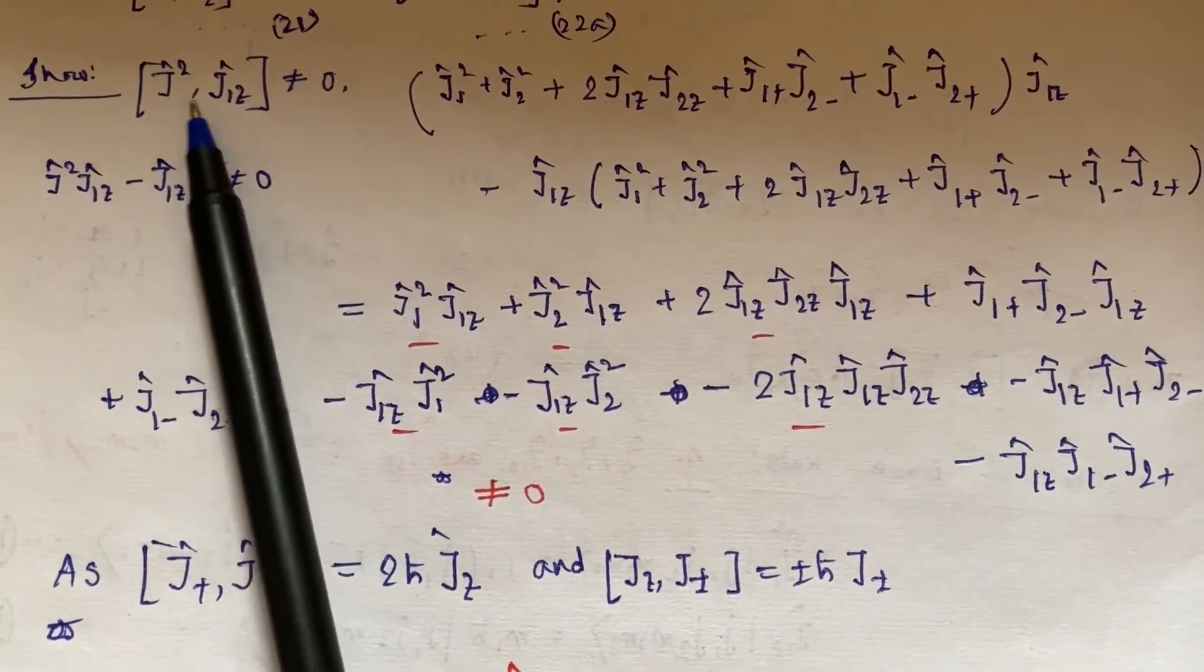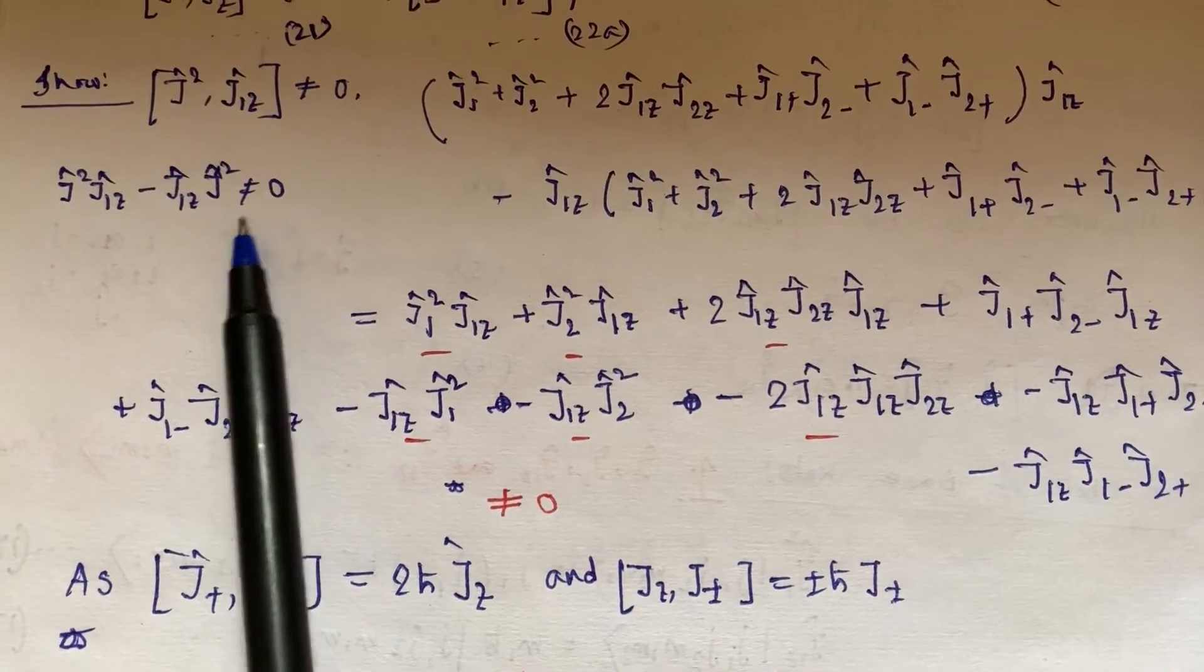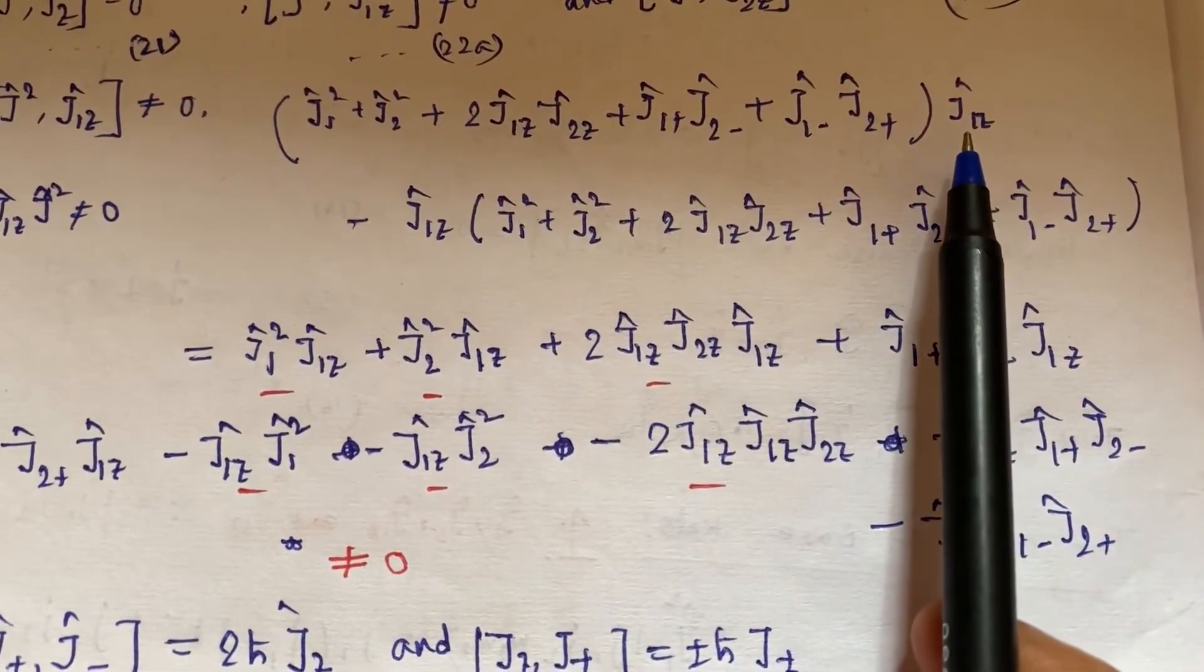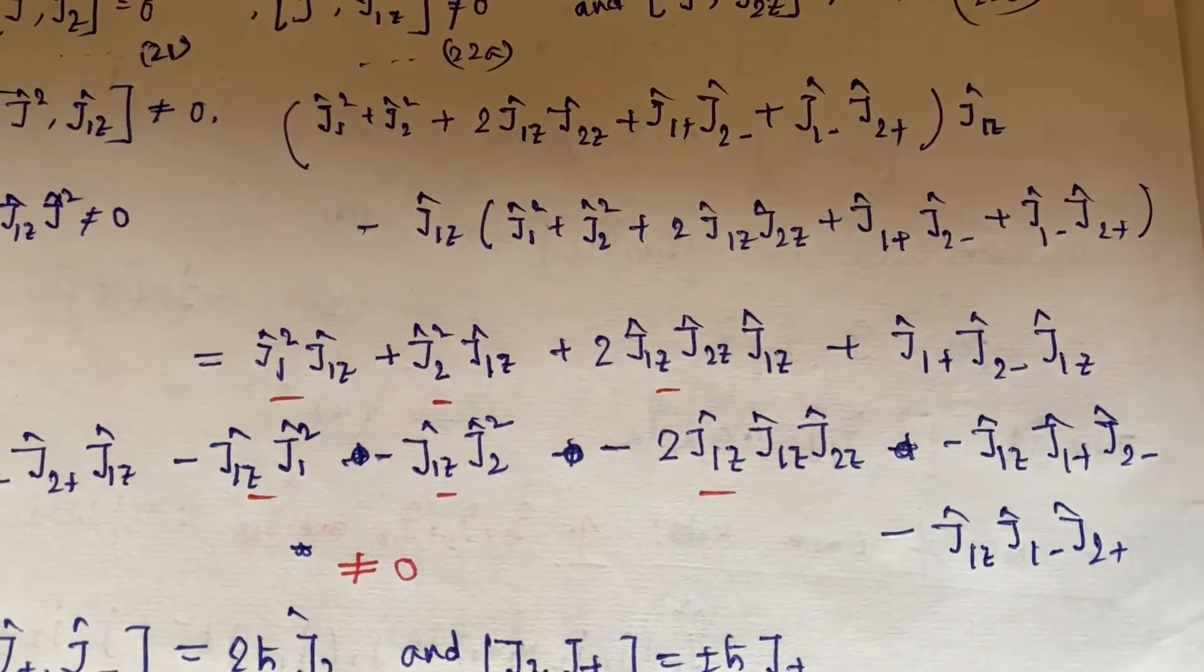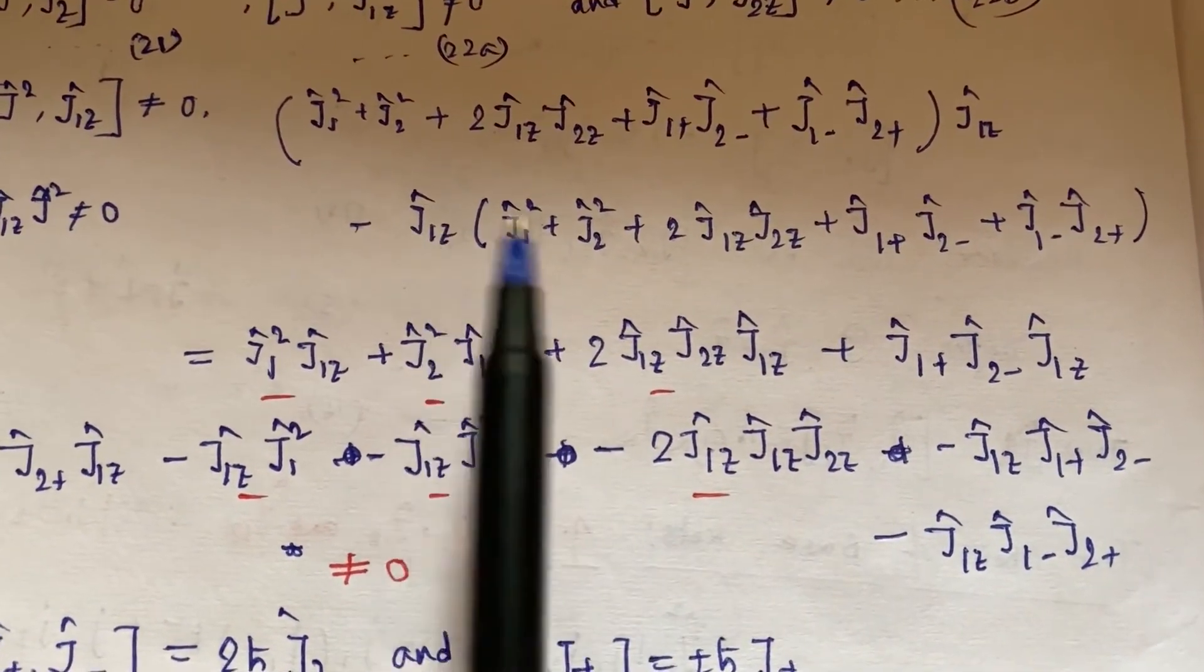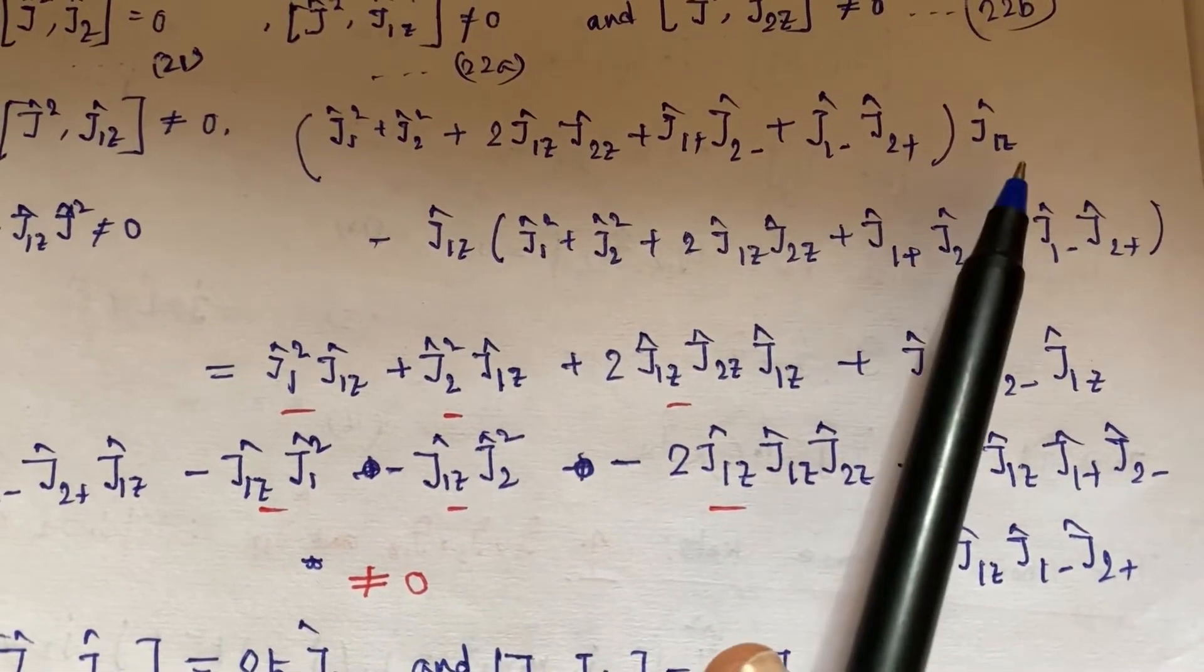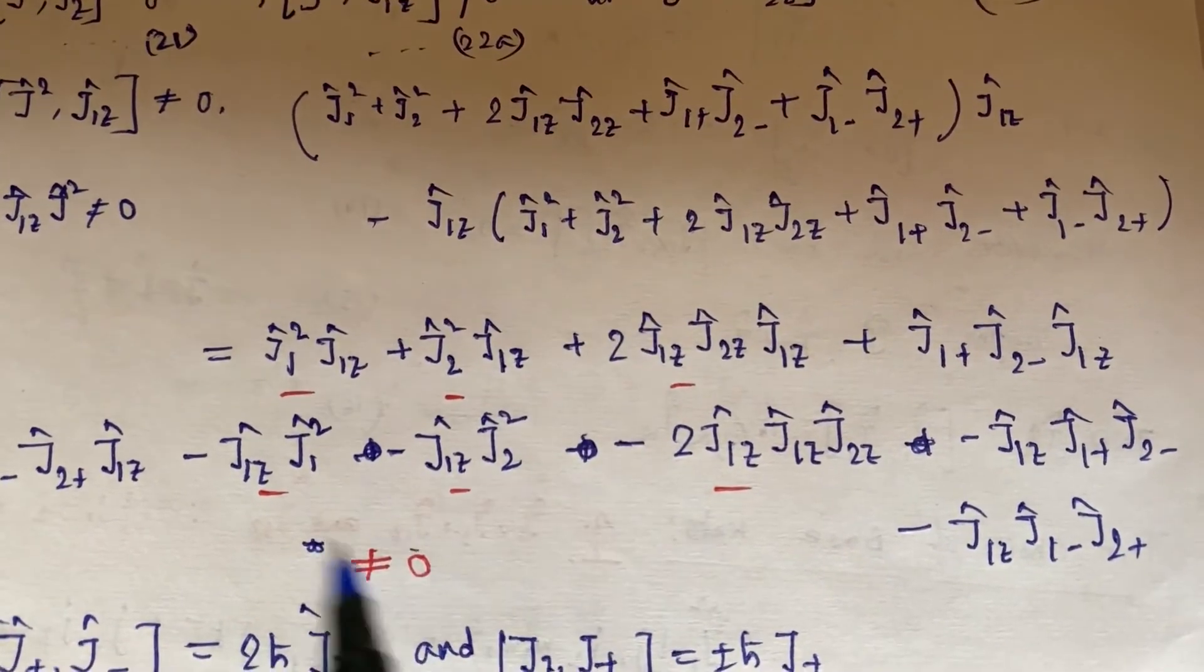We need to prove that [J², J₁z] is not equal to 0. So first I have written the definition of J² multiplied with J₁z, but we need to keep in mind that these are matrices, so in matrix multiplication order is important. We need to maintain that.